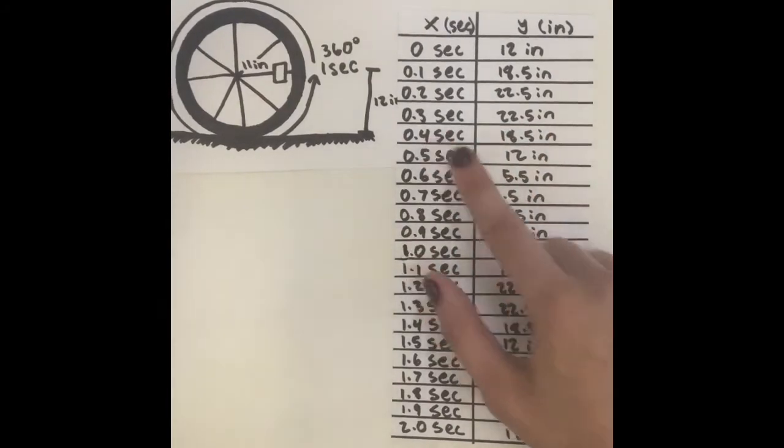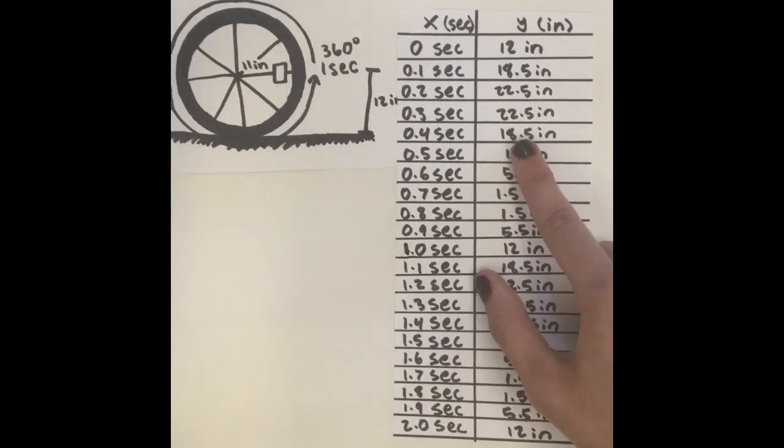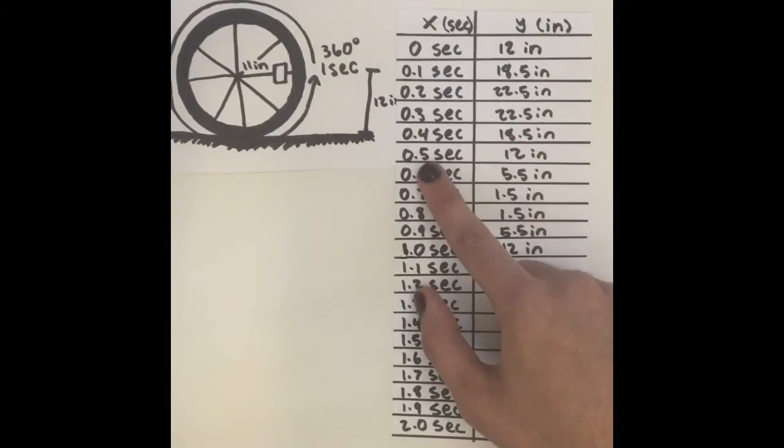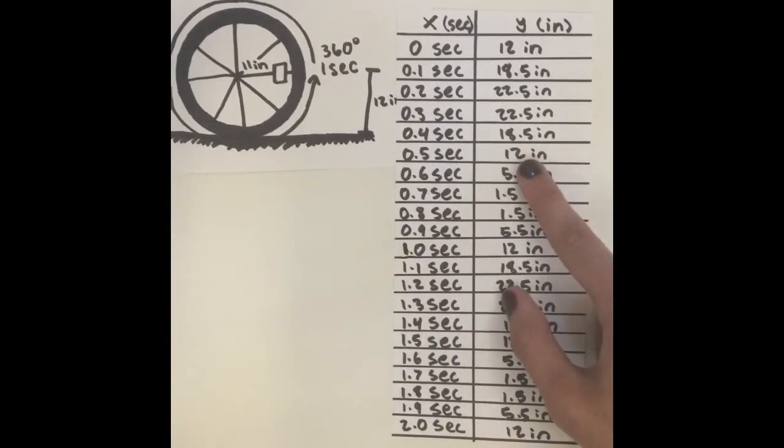At 0.4 seconds, the reflector is at 18.5 inches. At 0.5 seconds, the reflector is at 12 inches, meaning it is halfway through its first period.